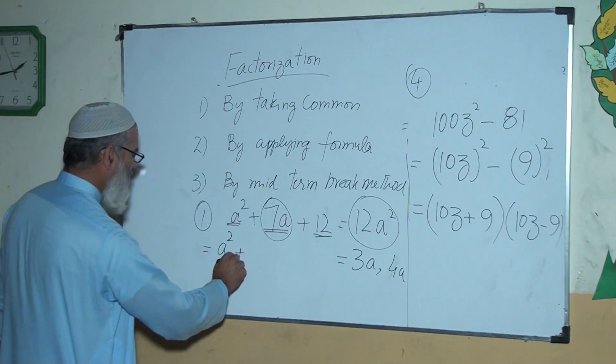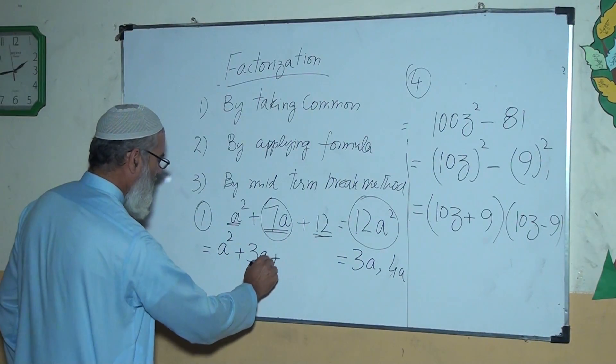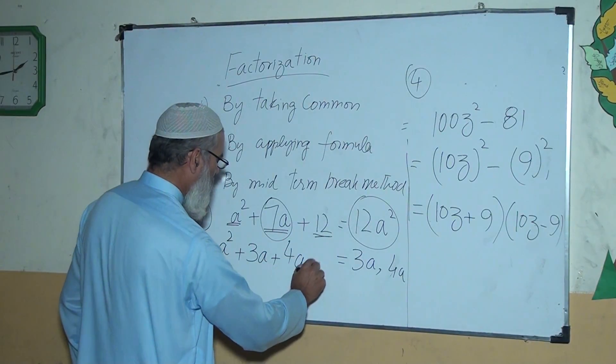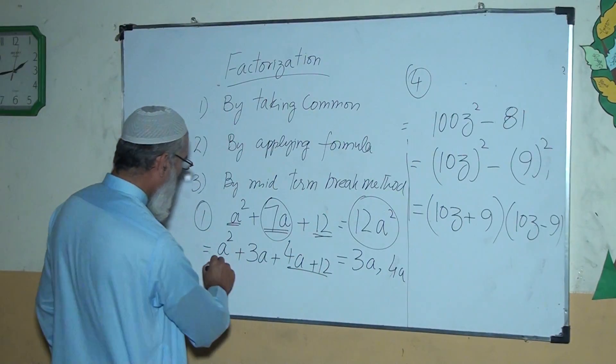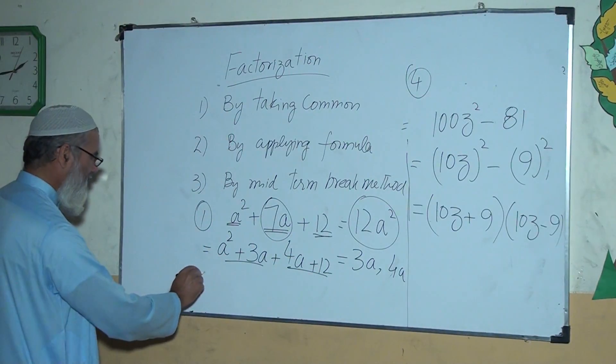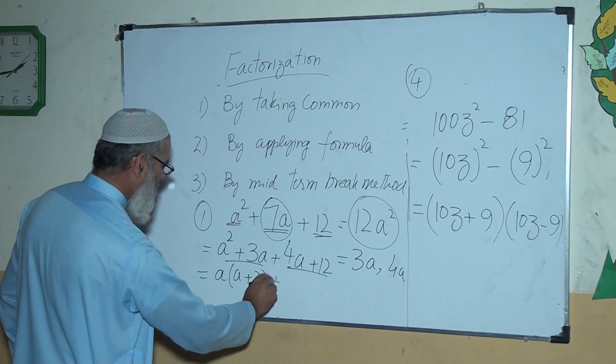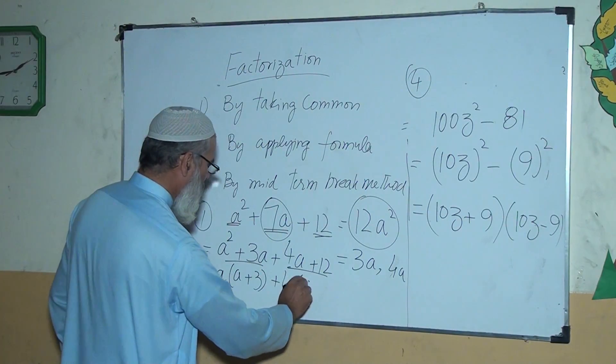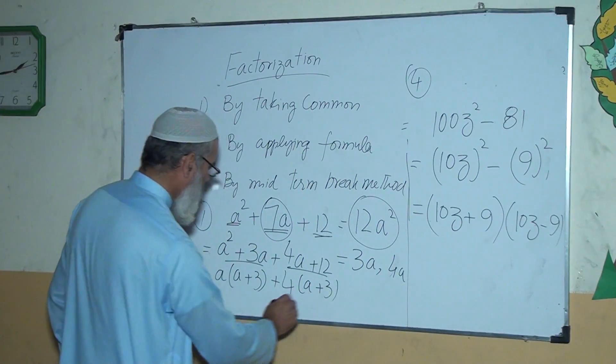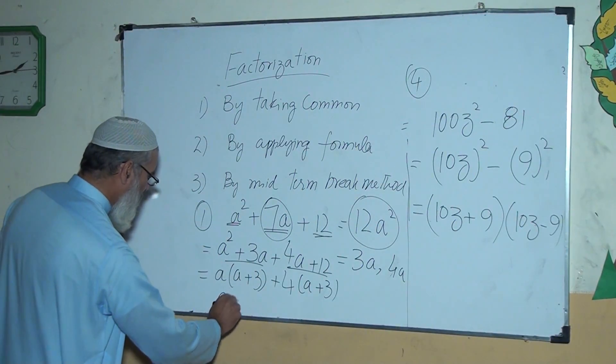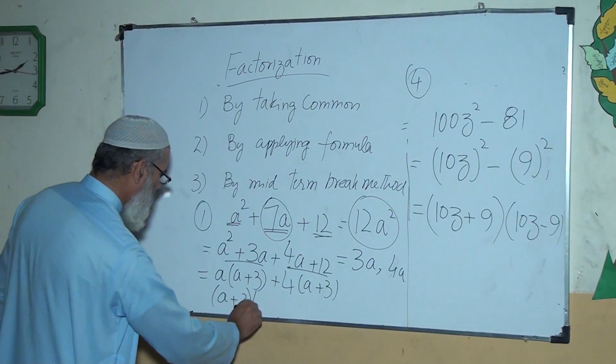So it will be a² + 3a + 4a + 12. Now taking common, here a is common, then a + 3. Here 4 is common, it will be a + 3. a + 3 is again common, the final answer will be like that.